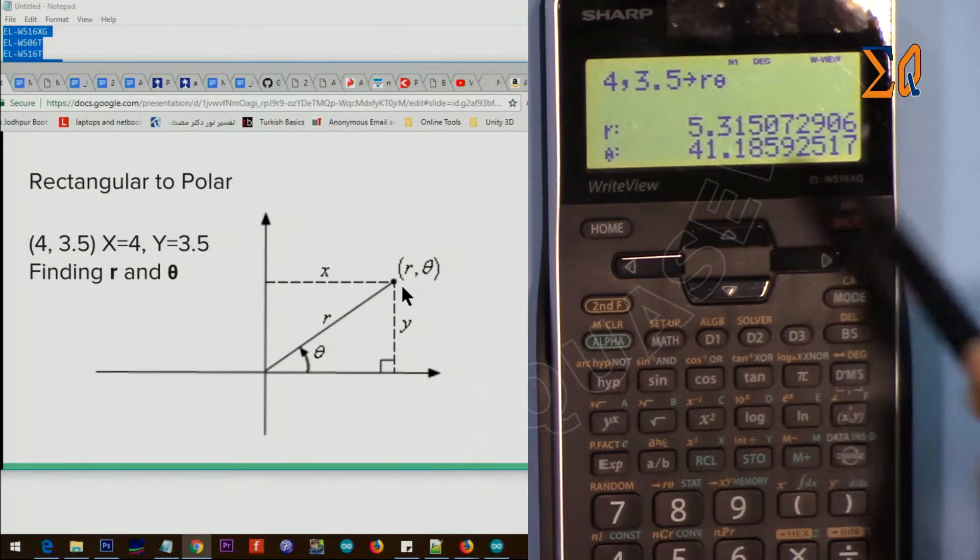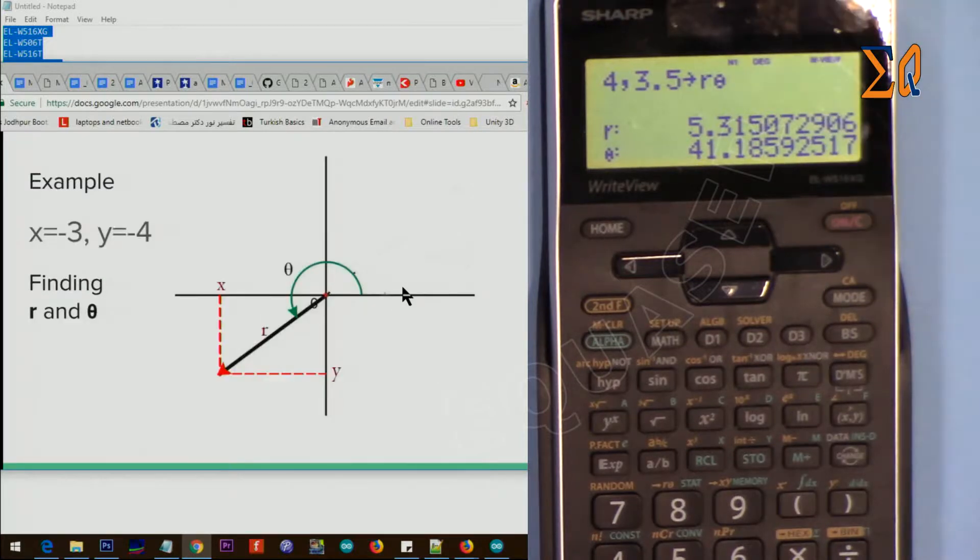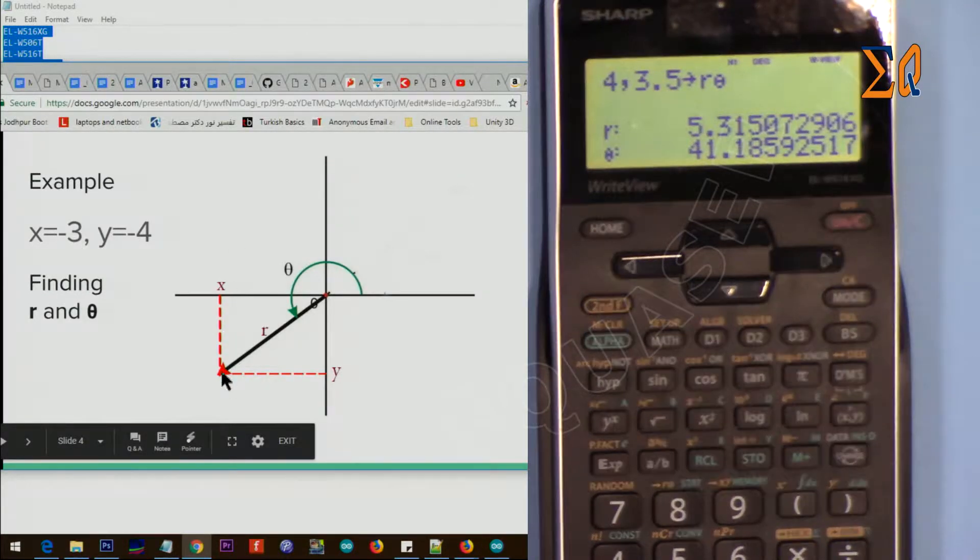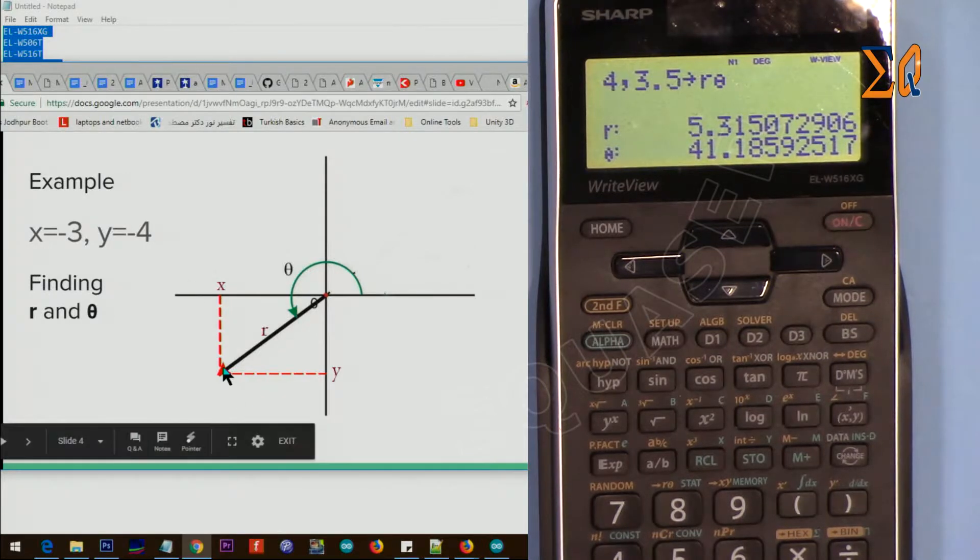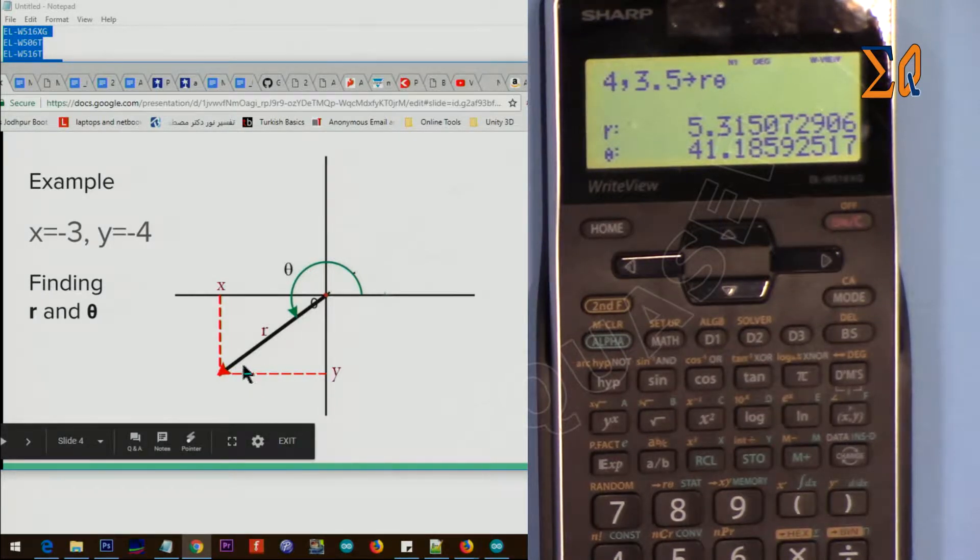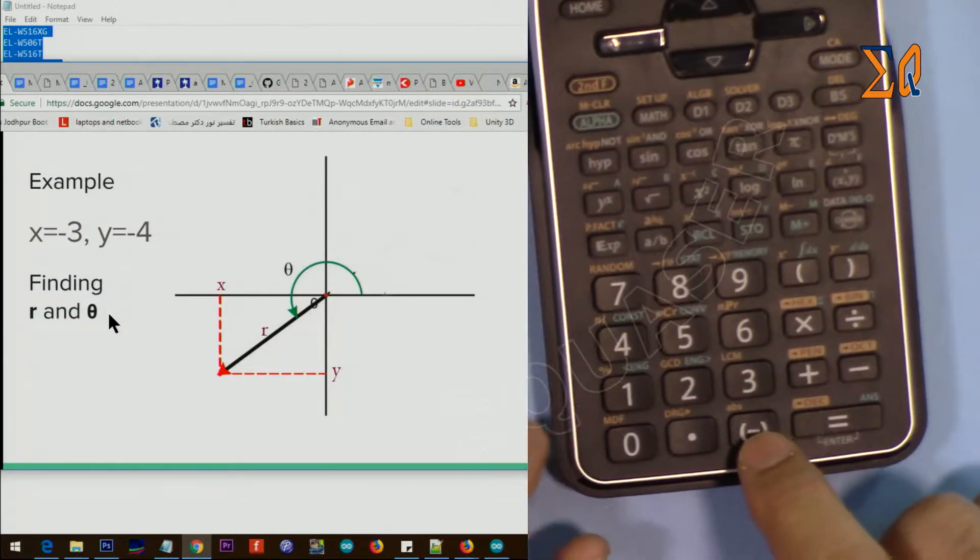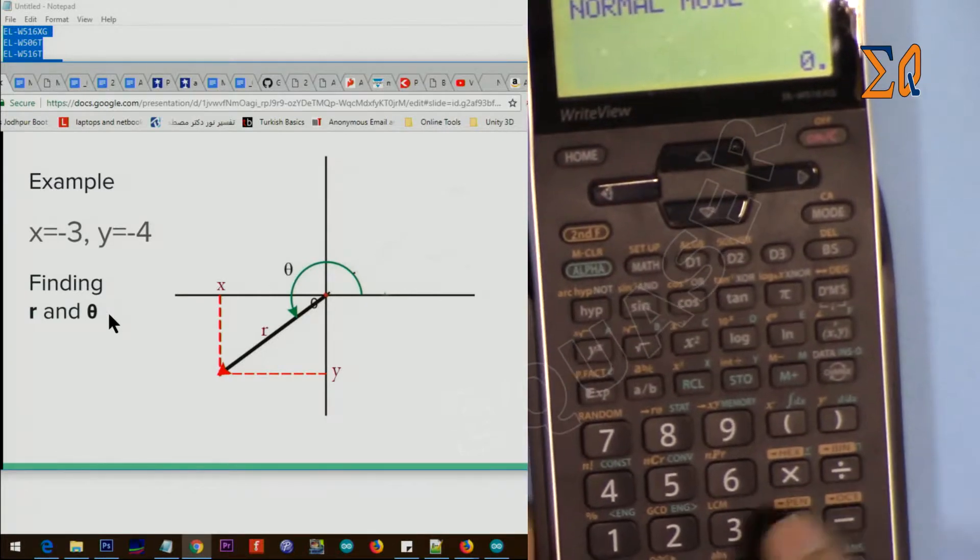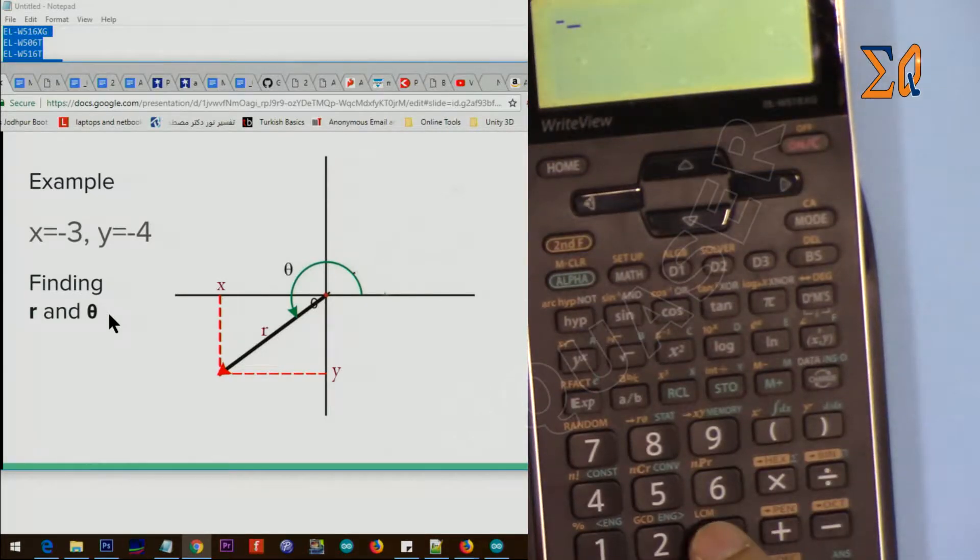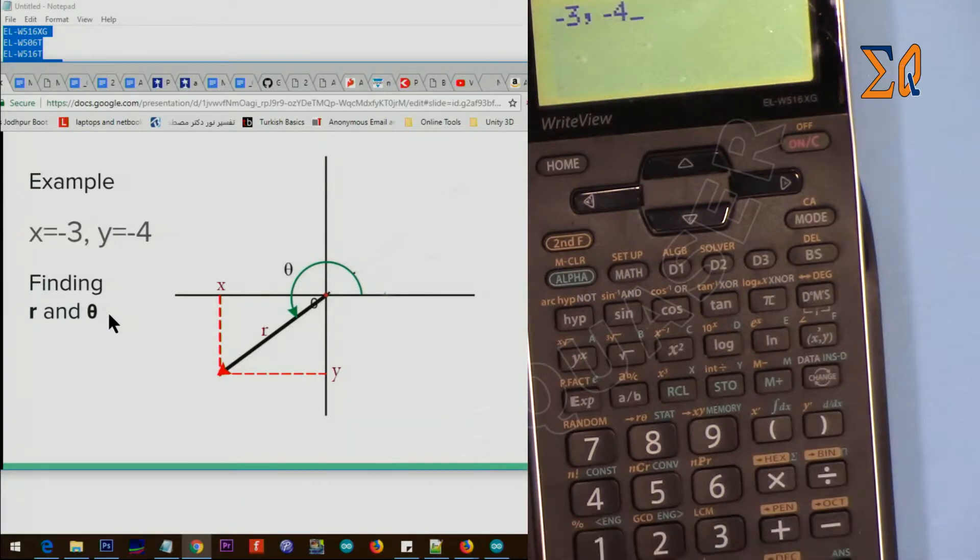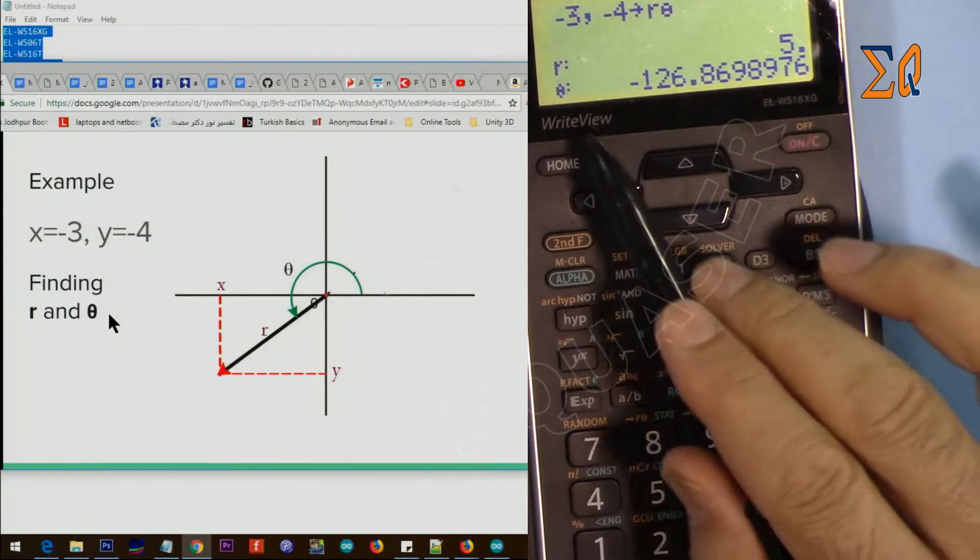Now let's enter this one. So X at this point, X is minus 3, and then Y down is minus 4. We want to find r and theta. For minus, we press this button, so I'm pressing minus 3, comma, minus 4, and then second function r and theta.